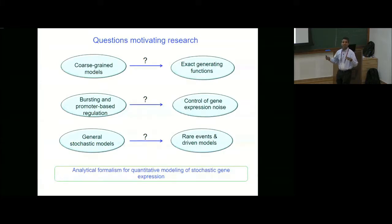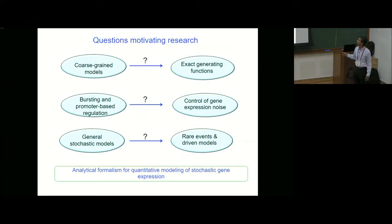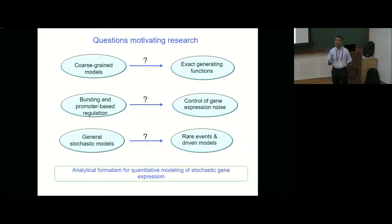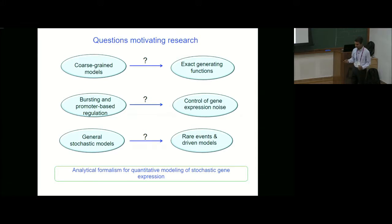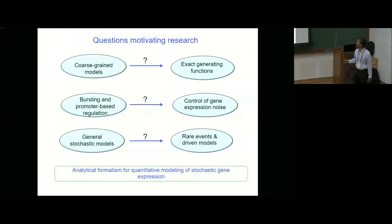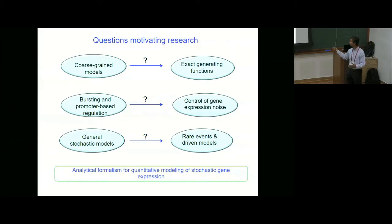That sets up the stage for the questions that motivated the research I'm going to show. At the first level, for simple core stochastic models which seem to work for a variety of examples, how do you obtain exact generating functions? At the next level, we want to include the observed complexities — bursting and promoter-based regulation — to understand how these processes can be used to control fluctuations in gene expression. And finally, we want to consider an even more general class of stochastic models for which we would like to quantify the probability of rare events and obtain the driven model.